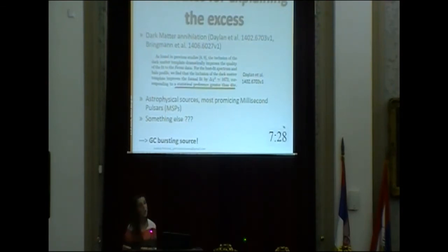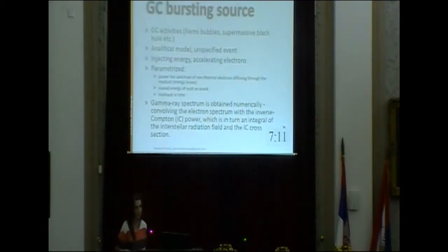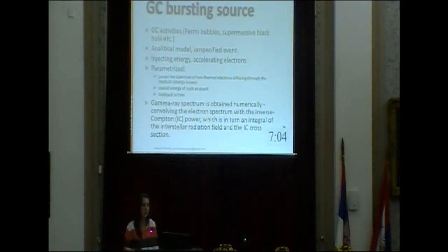We focused on something that could be categorised as an astrophysical source. We propose a completely new way of explaining this gamma-ray excess and have named it the galactic center bursting source. As previously stated, judging by the Fermi bubbles, our galaxy probably had an active past, even though it is quiet at the moment. We have Fermi bubbles as witnesses of such a past, and we also have the supermassive black hole, so we expect certain activities may occur in the galactic center. What we proposed was an analytical model of unspecified events — we stay agnostic to what the event may be.